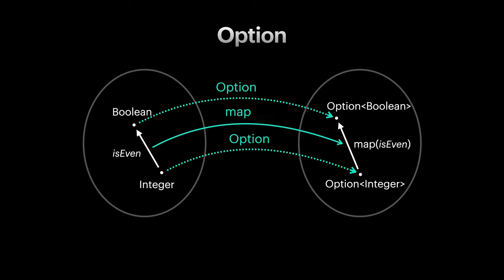So calling map on is even returns a function that receives an option of integer and returns option of boolean. To be more accurate, this map function specifically lifts functions to an option context. In order to understand how map function for option works here, think of a value like 12.